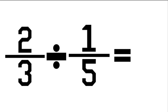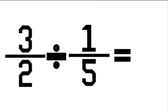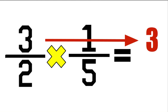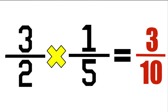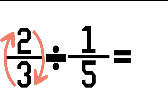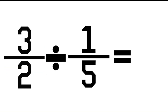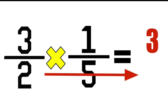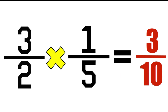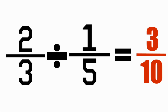To divide fractions, you need to flip one of your fractions upside down and change your division sign to multiply before multiplying your top row straight across and your bottom row straight across. So you're going to flip your first fraction upside down, change your division sign to multiply, and then multiply straight across the top your numerators together and straight across the bottom your denominators together. This will give you a new fraction which is your answer.